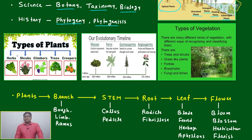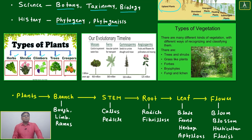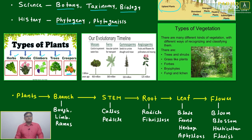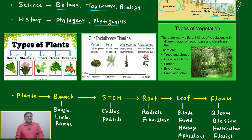We should never confuse the major categories of plants: herbs, shrubs, climbers, trees, and creepers. Creepers are plants whose stems are not very strong — they develop almost on the ground, like watermelon. Climbers include plants like money plant. Trees and shrubs we normally know.